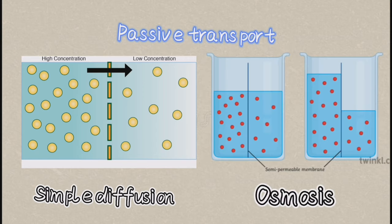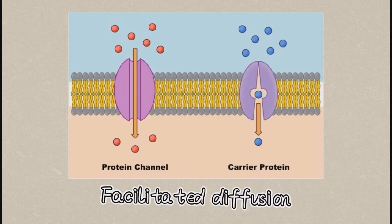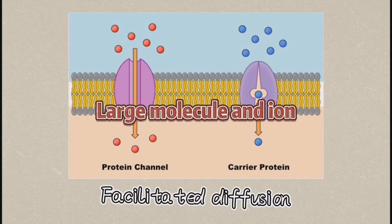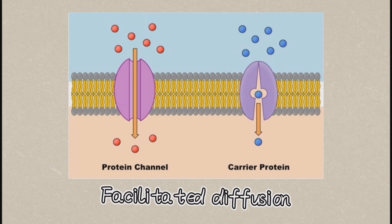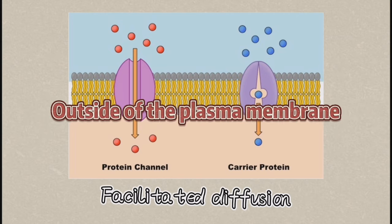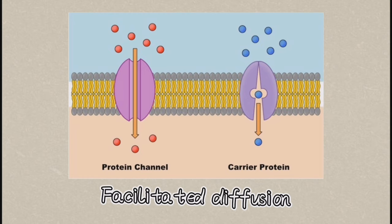Facilitated diffusion involves channel proteins and carrier proteins. It does not require energy and helps transport large molecules and ions that cannot pass through the phospholipid bilayer. Channel proteins act as channels to let substances through. Carrier proteins have specific binding sites — for example, when glucose concentration outside is higher than in the cytoplasm, glucose binds to the specific site on the glucose carrier protein, which changes shape to transport it into the cell, then returns to its original shape.